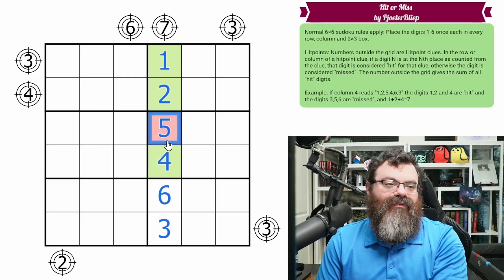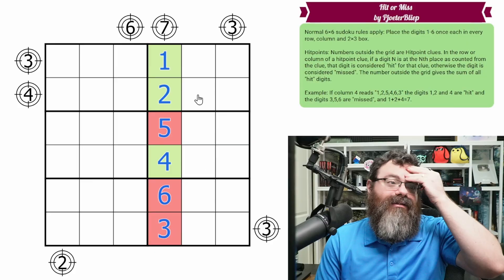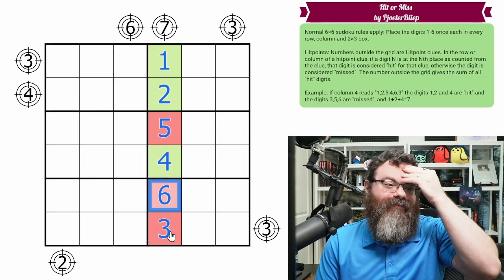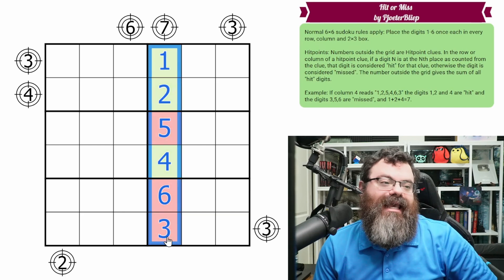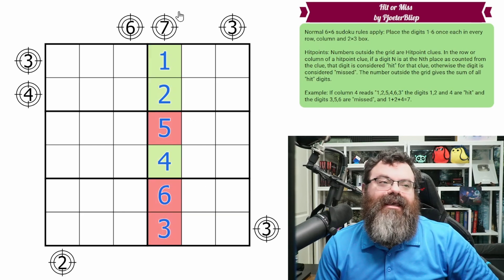So we did one, two, three, four, five no, six no. So one matches, two matches, three does not, four does match, five doesn't match, six doesn't match. So you just count down. If it matches the count, then it's a hit.